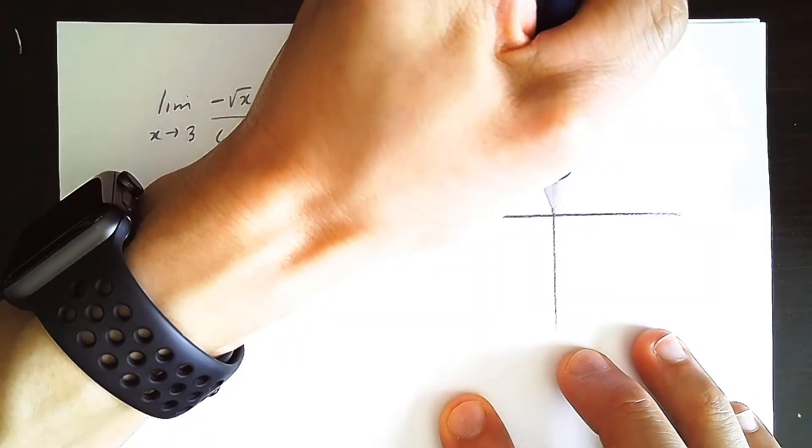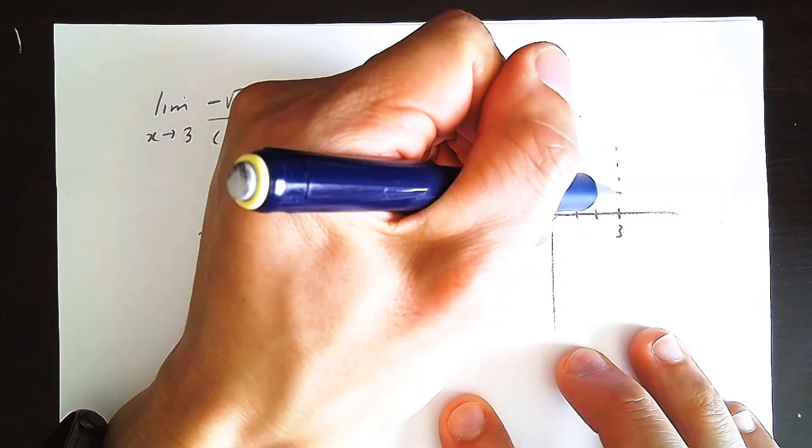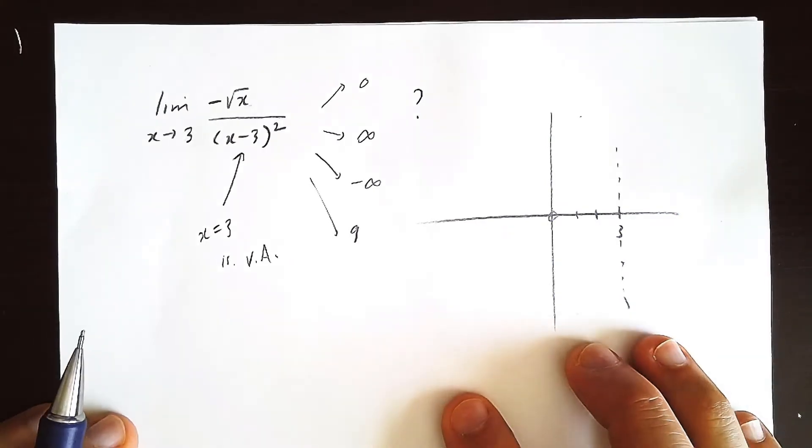So if you have some graph, this is zero, one, two, three, we're expecting some vertical asymptote here. Now what else do we know?